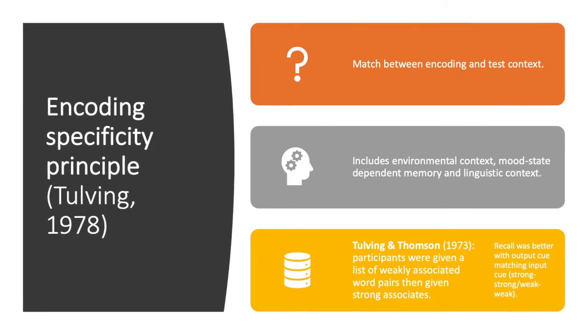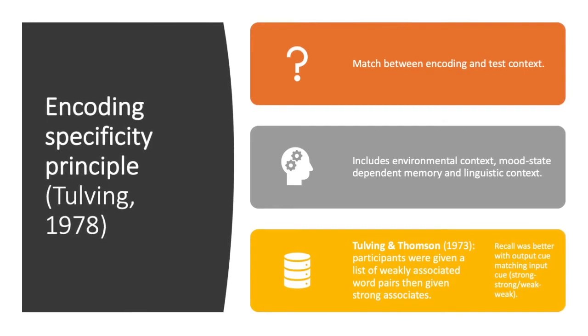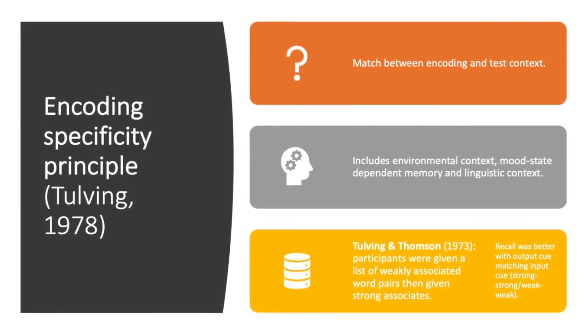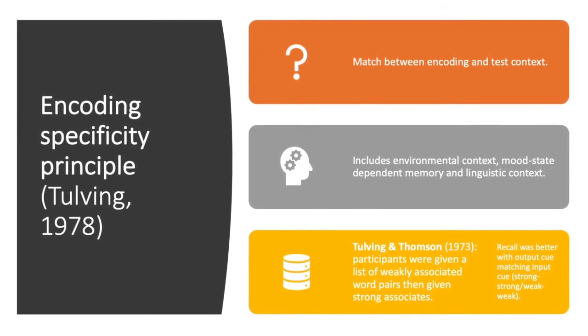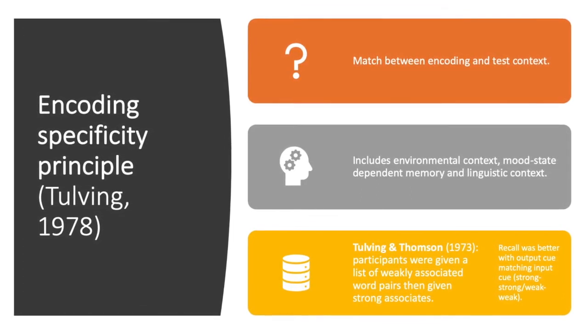The encoding specificity principle, according to Tulving 1978, is the match between encoding and test context. It includes environmental context, mood state-dependent memory, and linguistic context.